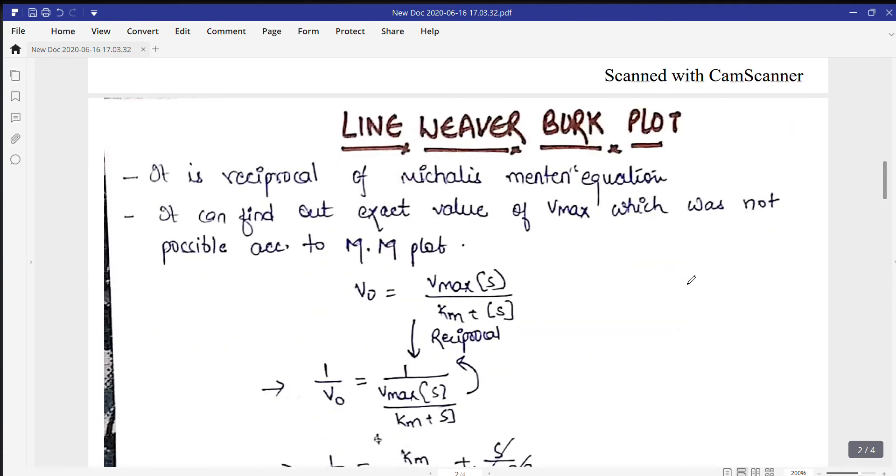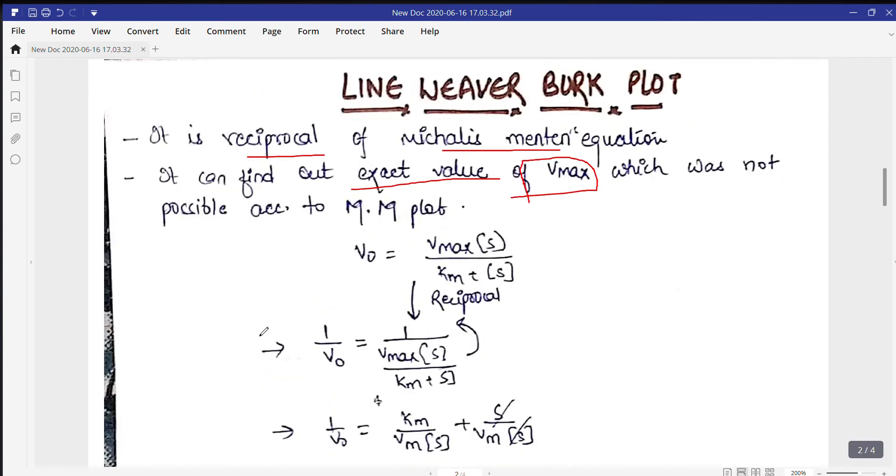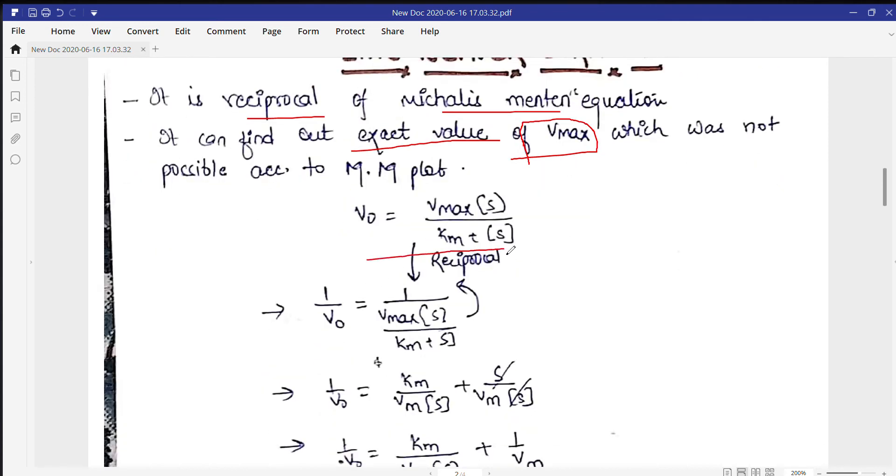Now, by using the Michaelis-Menten equation, we cannot find the exact value of Vmax. According to scientists, we cannot find the exact value of Vmax. So there is another plot that scientists have developed for finding the exact value of Vmax, and it is the reciprocal of the Michaelis-Menten equation. Let's see. Here this is the Michaelis-Menten equation: V0 equals Vmax S upon Km plus S. Now reciprocate this reaction.